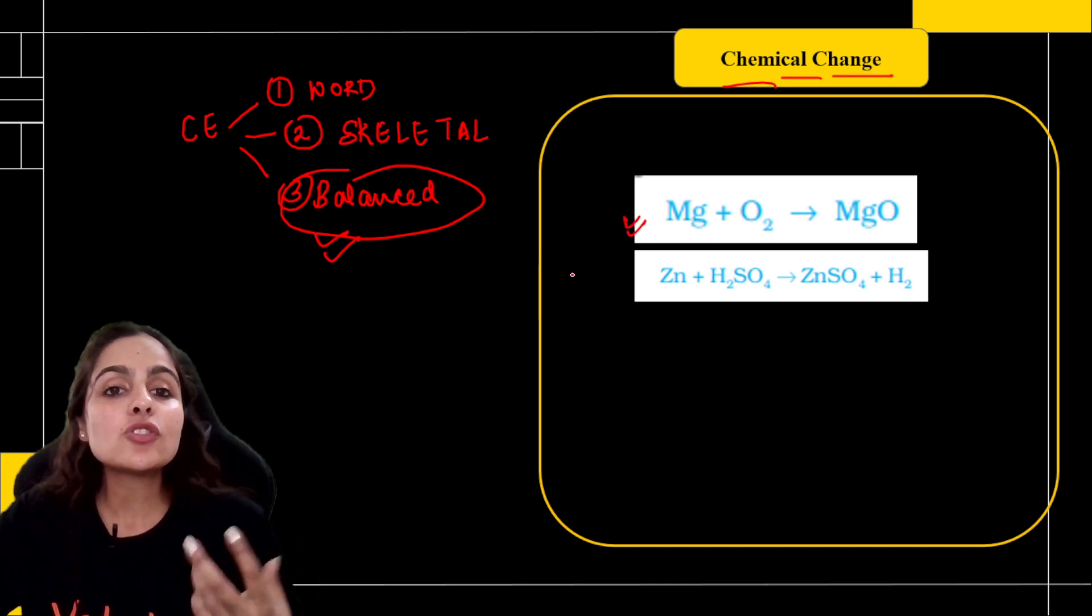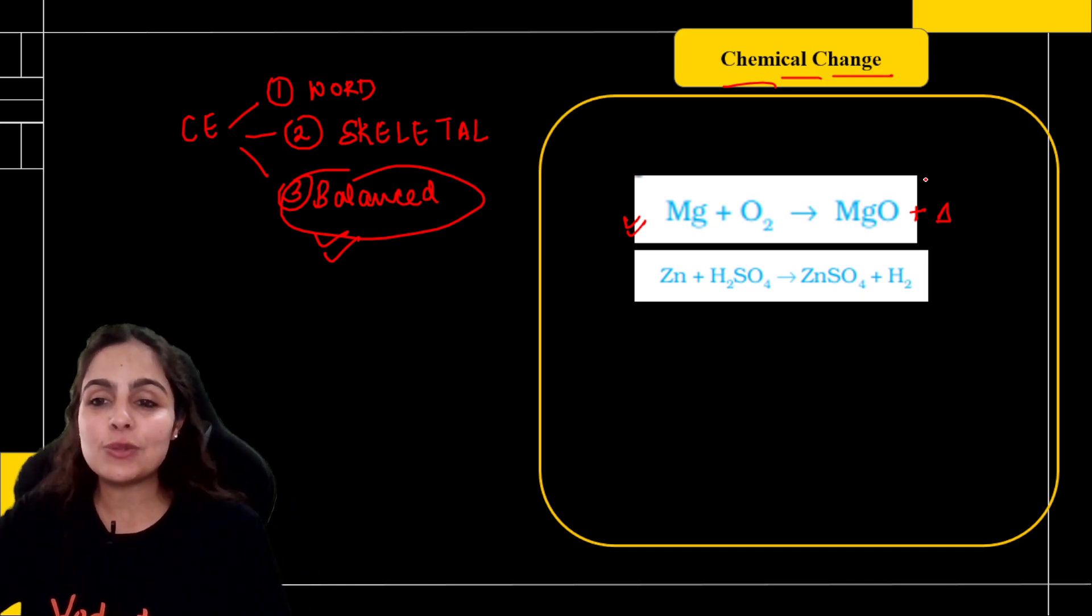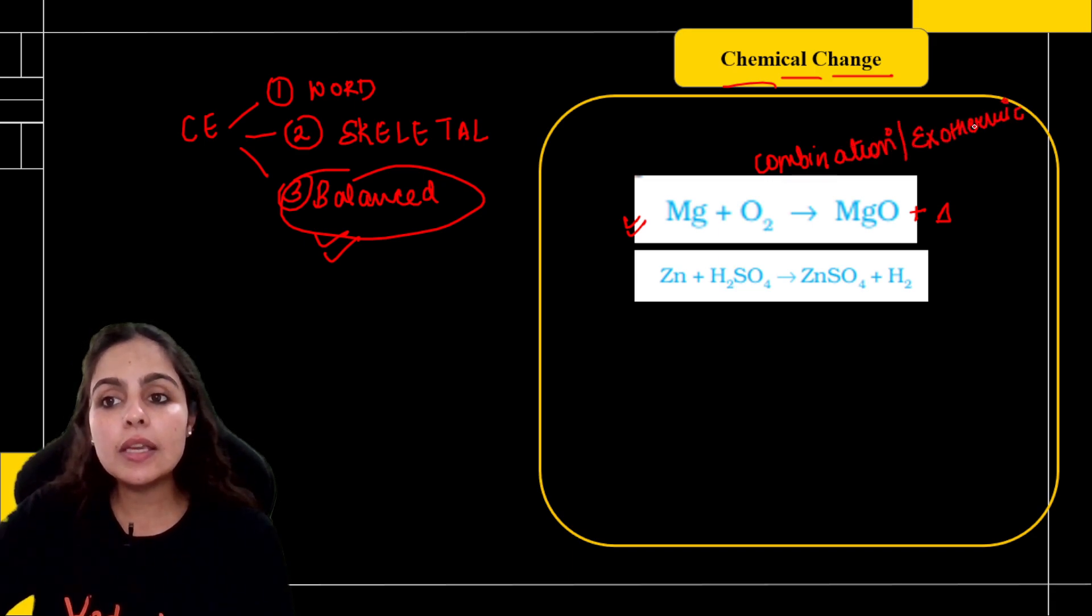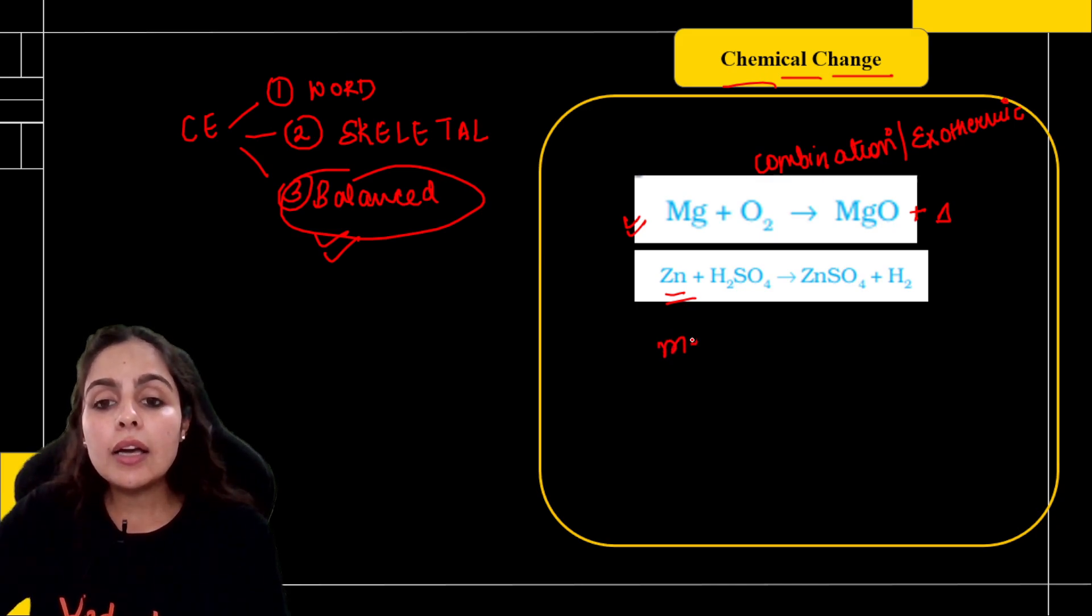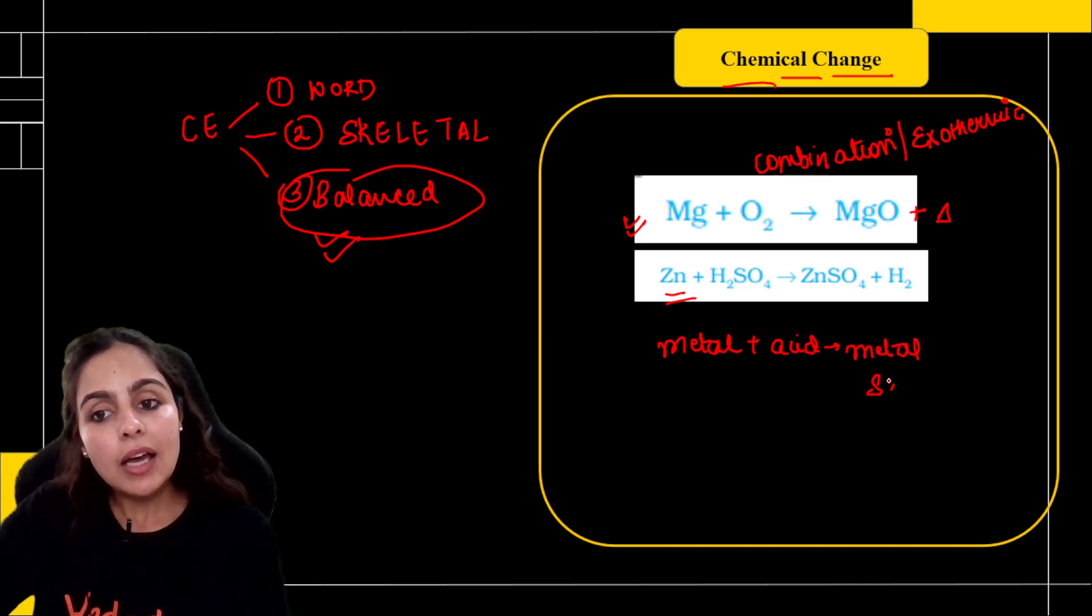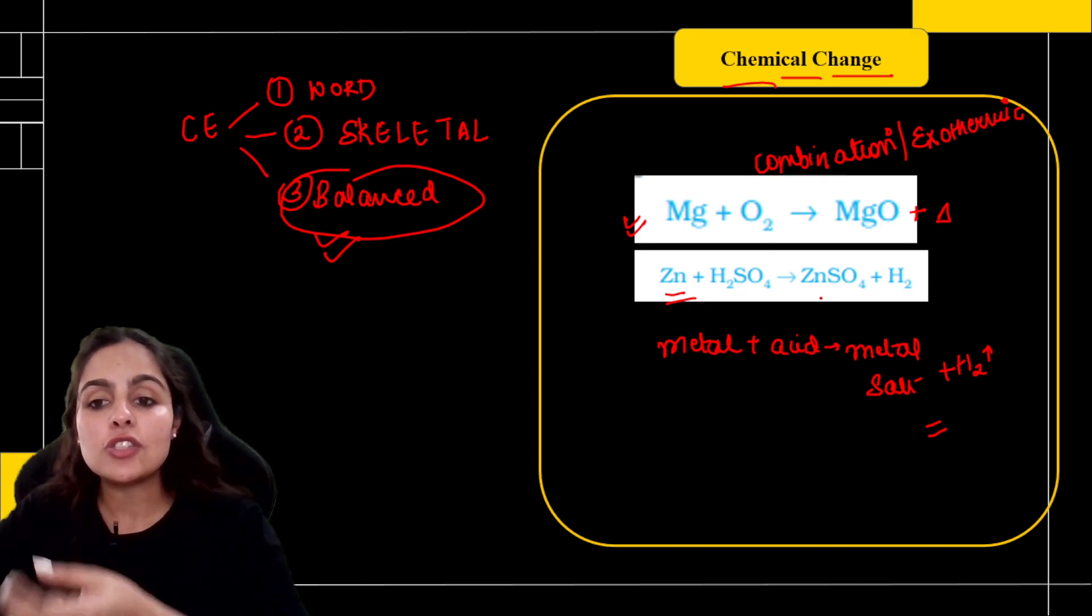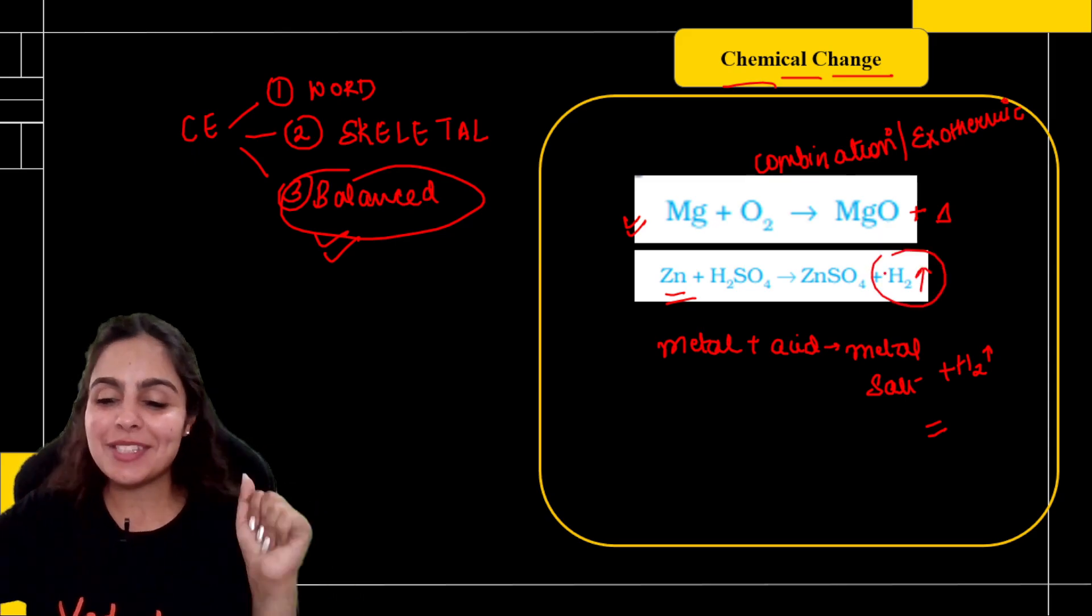Let's move on to chemical change. Here you have a skeletal equation for chemical changes to show you. Like magnesium, if you burn in the presence of oxygen, that gives you magnesium oxide. But with this heat, you produce heat. So it's a part of a combination reaction as well as it is exothermic reaction. Chemical changes can be an example of chemical changes. If you react metal with acid, then you will give metal salt plus hydrogen gas.